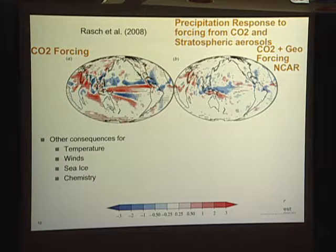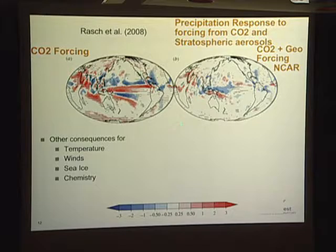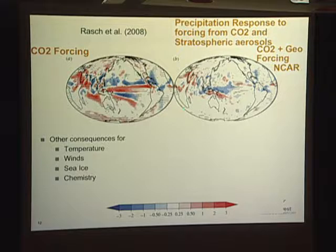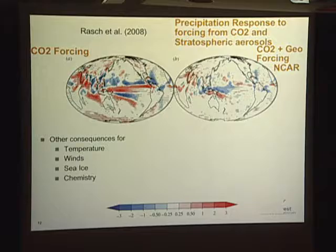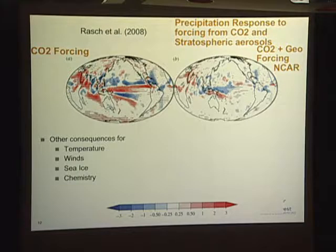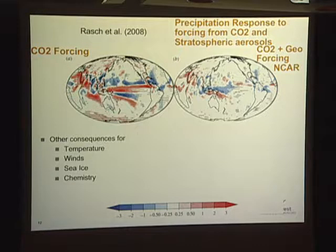If you impose the geoengineering forcing by introducing the stratospheric aerosols, the white areas indicate little change with respect to present-day. This geoengineering simulation is returning the planet to something that looks more like present-day precipitation distributions, and the colored areas in both positive and negative are much reduced. In spite of there being some consequences to the precipitation distribution — as we suspect from the Pinatubo record — the models suggest that geoengineering would return the planet to something more like the present-day.